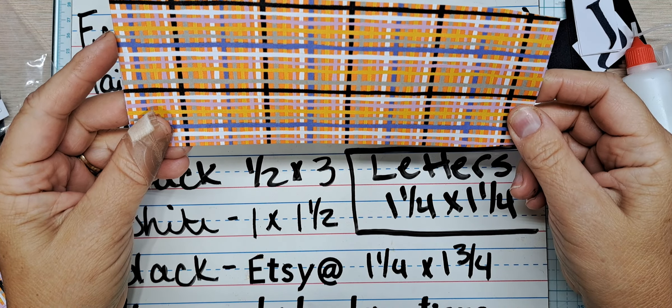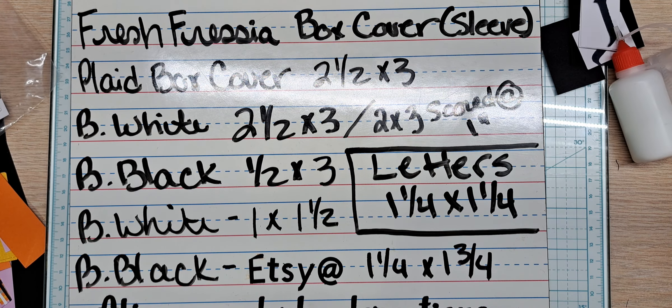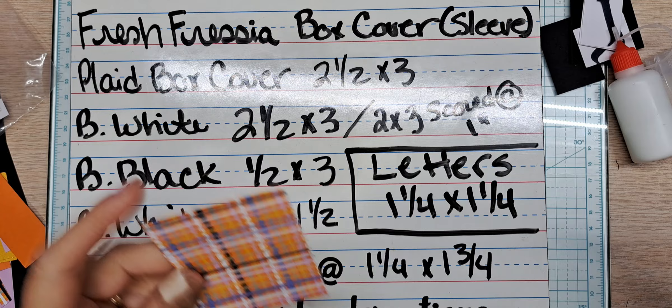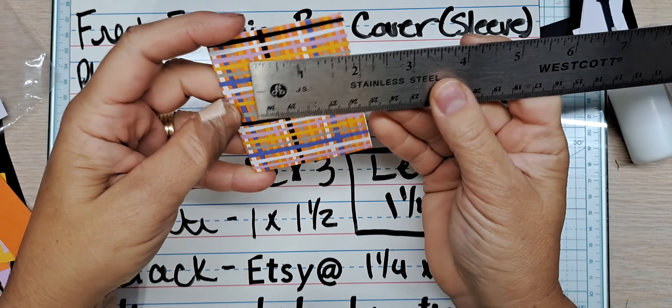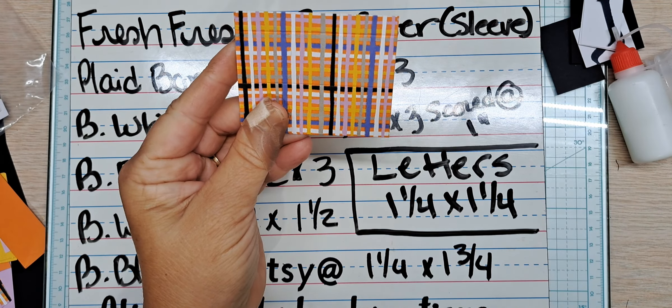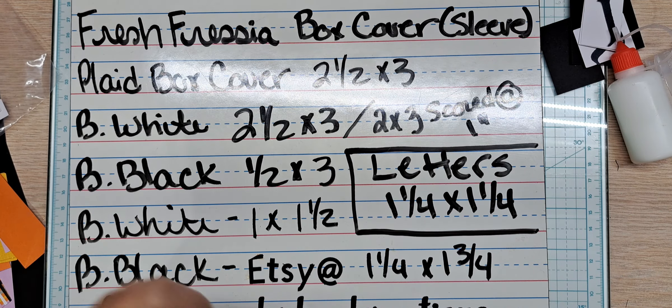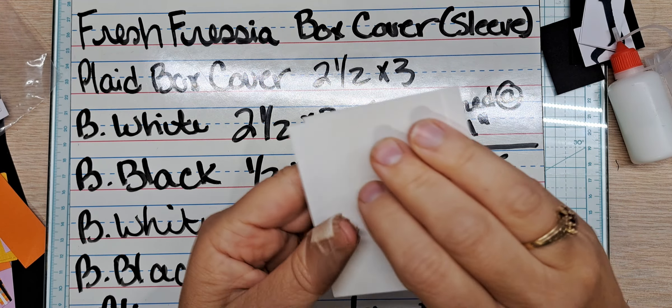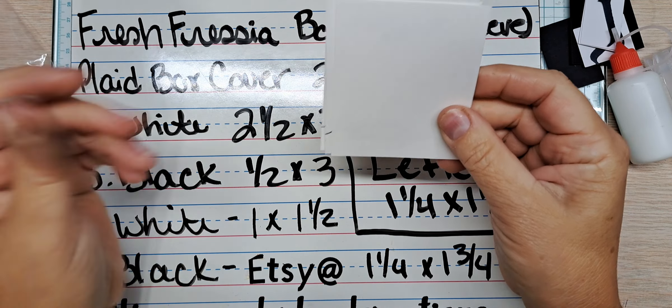So we're going to be using probably one and a quarter of these. And actually I'll show you. You will need two and a half by three. So it's two and a half by three. I'm going to show you how I'm cutting it. And it does have score lines, but with this print, you just can't see them. I absolutely love that.